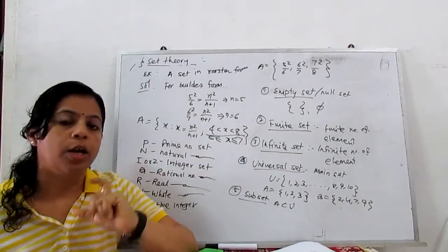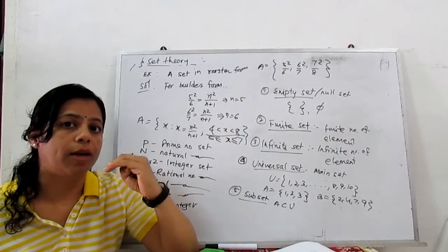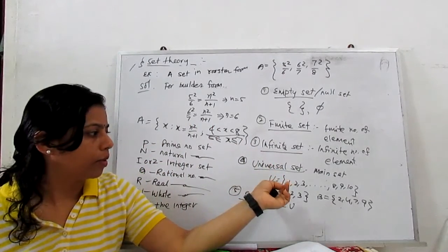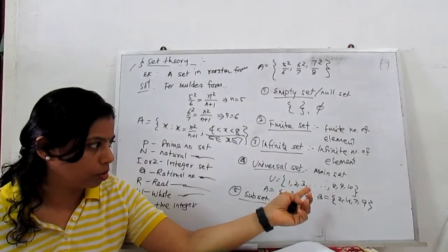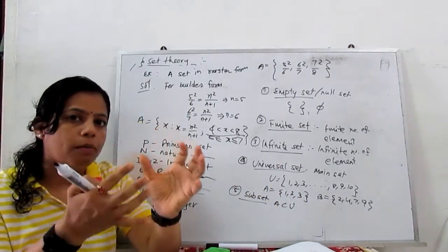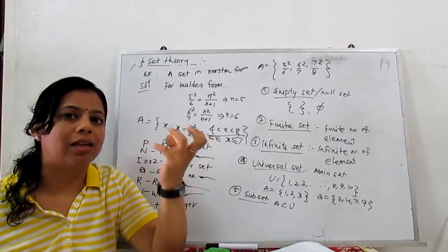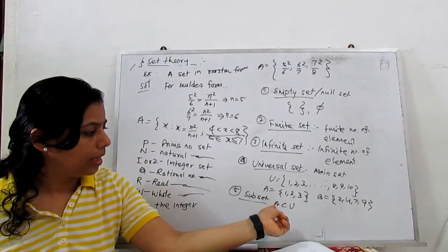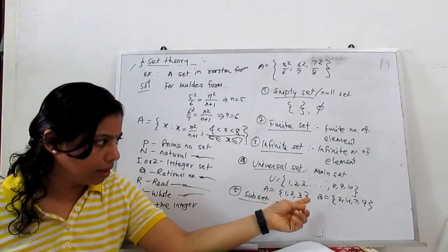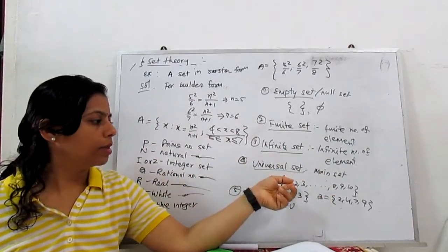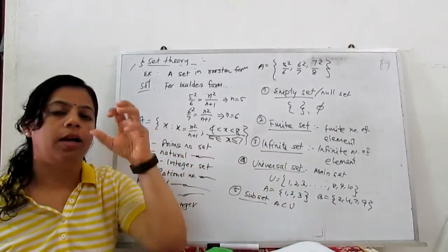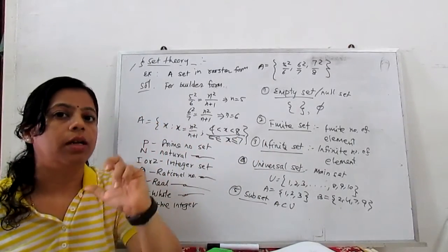Next is universal set. Universal set is most important because when we further study subsets and relations between subsets, there is definitely a universal set — meaning the main set. For example, if U is our universal set {1, 2, 3, 4, ..., 10} and A and B are subsets, then subset means from the main universal set we take some elements and make another set. So we say A is a subset of U. B is also a subset of U because all elements of B also belong to the universal set. So universal set is the main set and subsets are collections of some elements from the universal set.